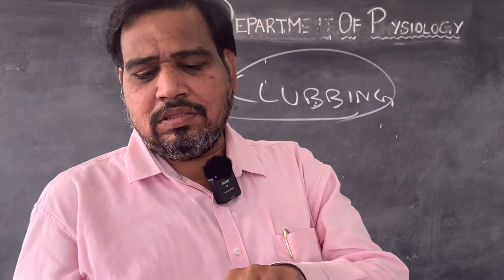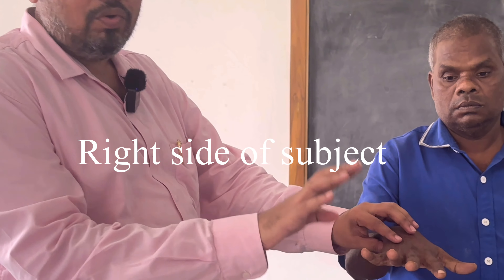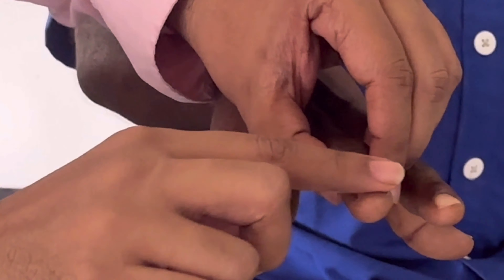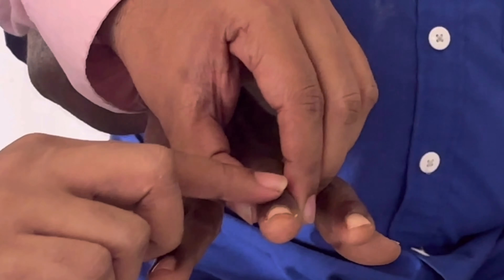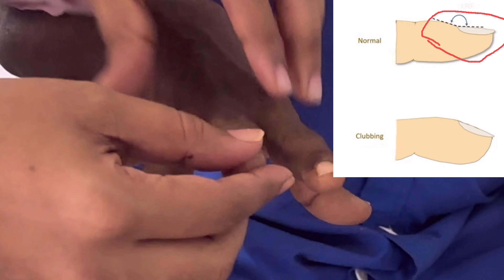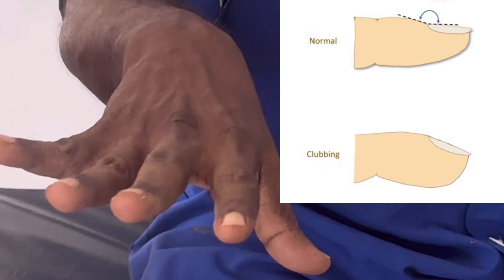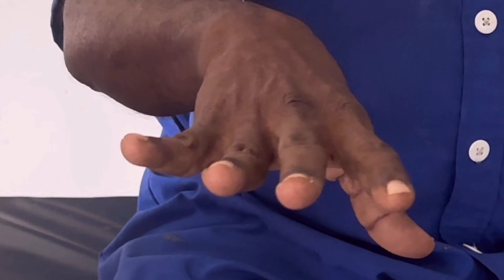Now I will show you the demo of how to test for clubbing. The examiner will stand by the side. I am now going to check whether he is having clubbing of the fingers. The angle between the nail and the nail bed — I can see from the sides. I am able to see that convexity. I am seeing from the sides whether there is any obliteration of the angle between the nail and nail bed. For him, it seems to be okay.